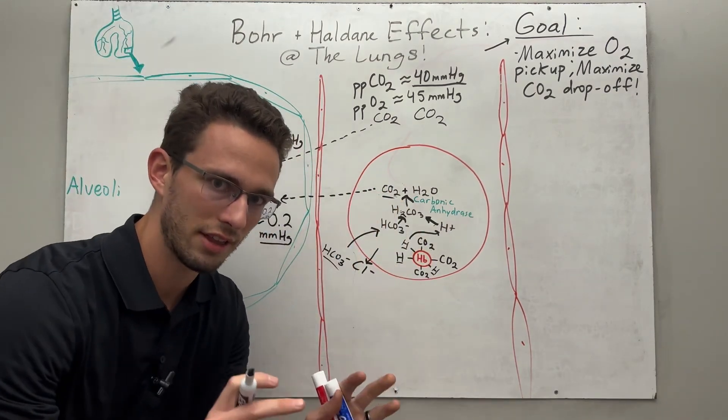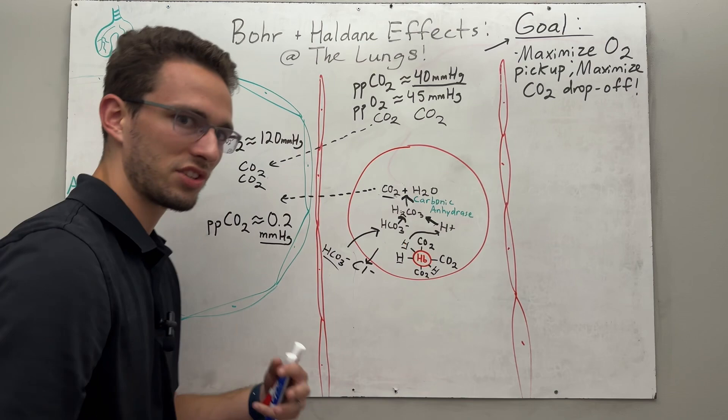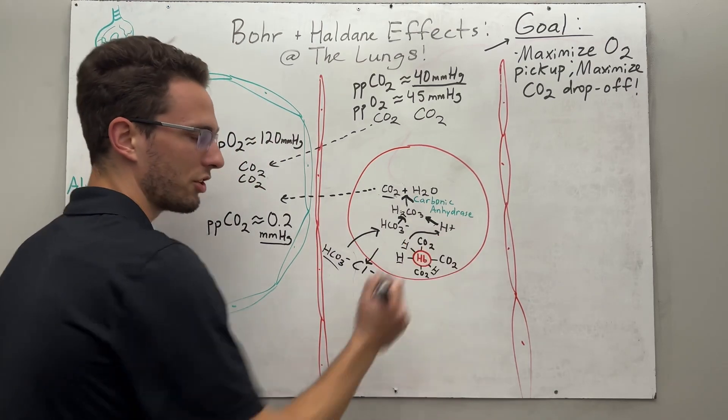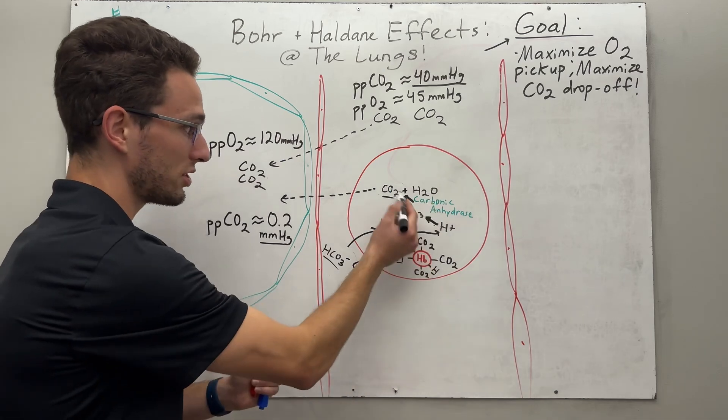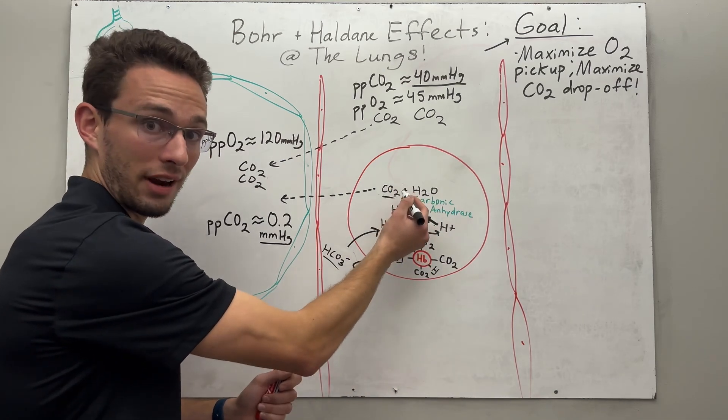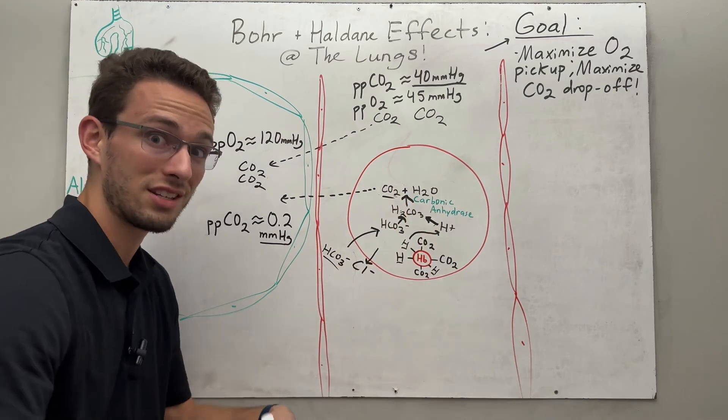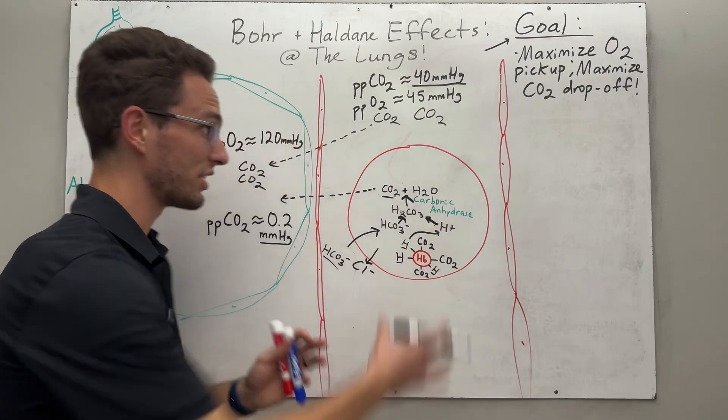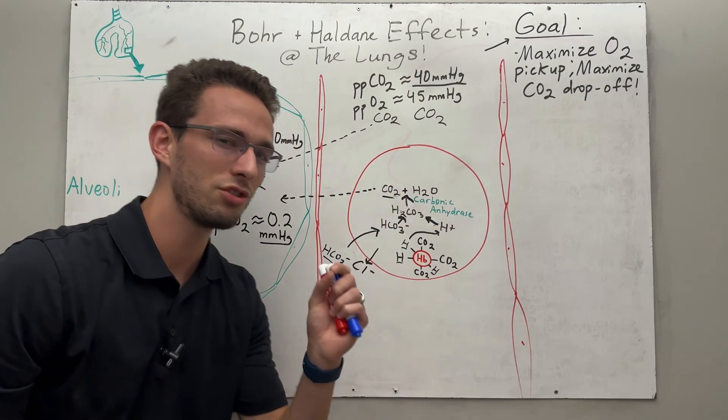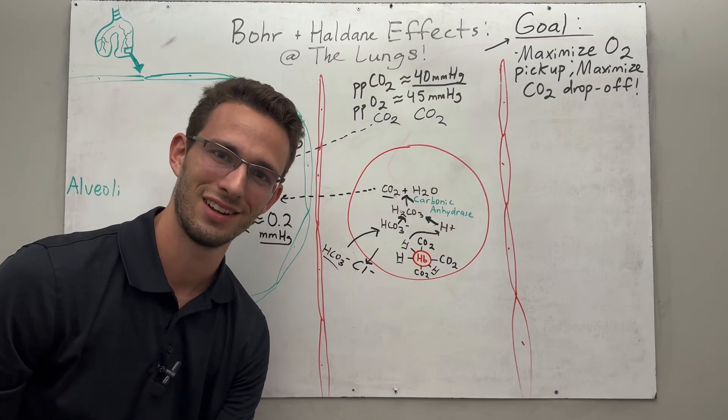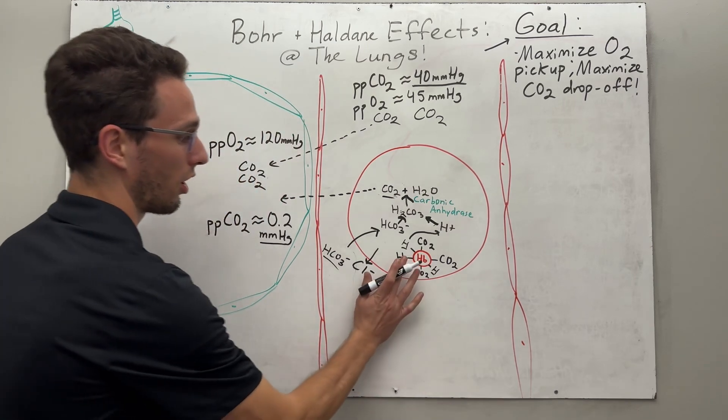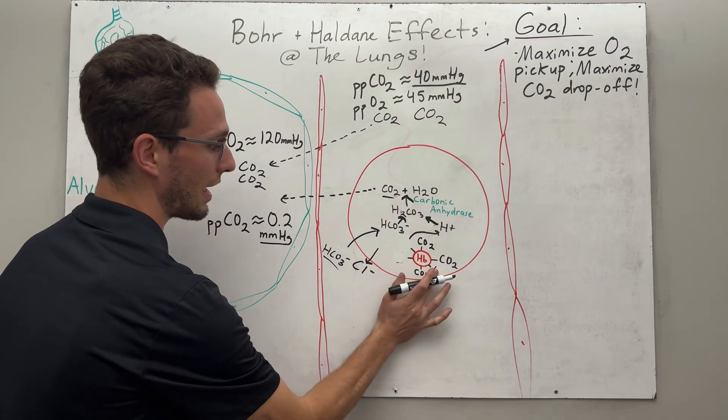Now here's the thing. Bohr effect, right? Deals with acidity. What happened to the hydrogen ions now that we did the reaction that direction? Well, I don't see any hydrogen ions anymore on this part of the reaction. So therefore, we diminish the amount of hydrogen ions in the solution. If we do that, what does oxygen want to do?